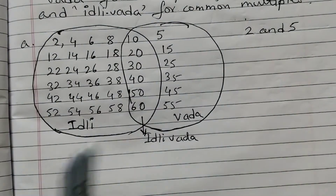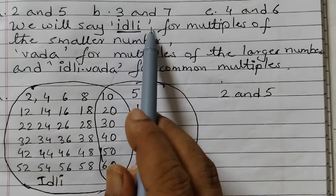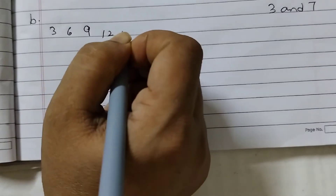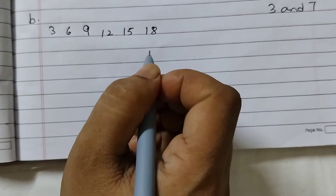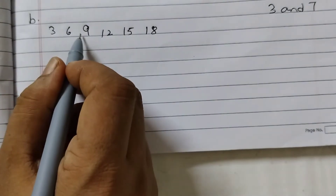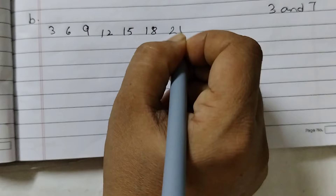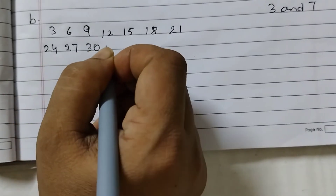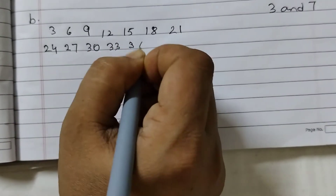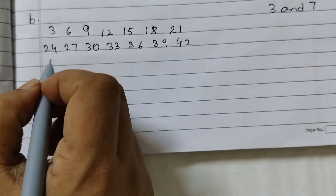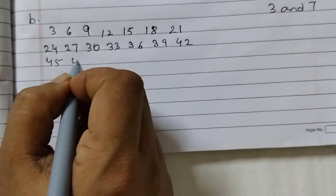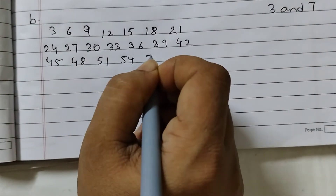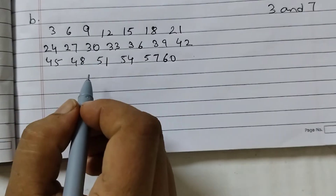So that was the first pair, 2 and 5. Now we will do the second one, 3 and 7. First we will write the multiples of 3: 3, 6, 9, 12, 15, 18. If you don't remember the table, go on adding 3 — 18 plus 3 is 21, 21 plus 3 is 24, 24 plus 3 is 27, and so on: 30, 33, 36, 39, 42, 45, 48, 51, 54, 57, 60. So these are the multiples of 3.